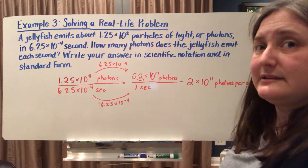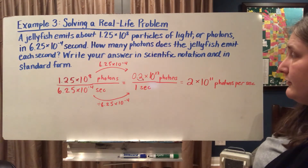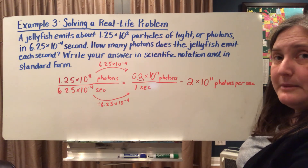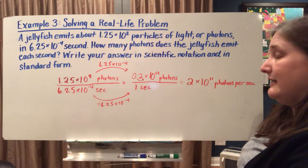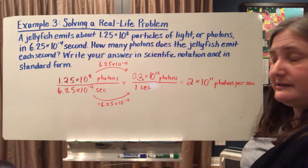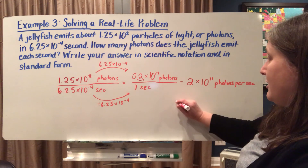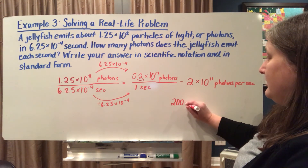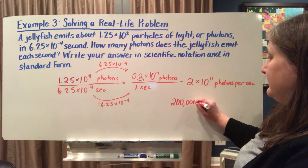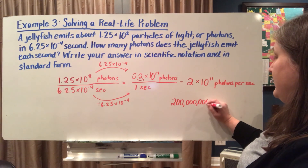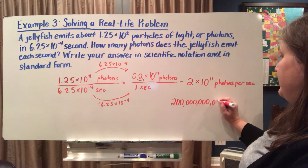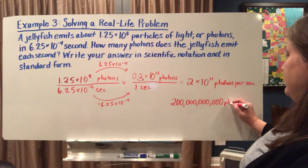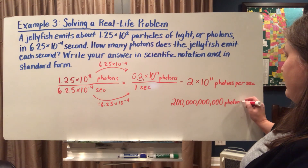To write this in standard regular form, 10 to the 11th power means multiplying by 10 eleven times, and every time you multiply by 10 you add a zero. So we add 11 zeros after the 2, giving us 200,000,000,000 — that's our standard form answer.